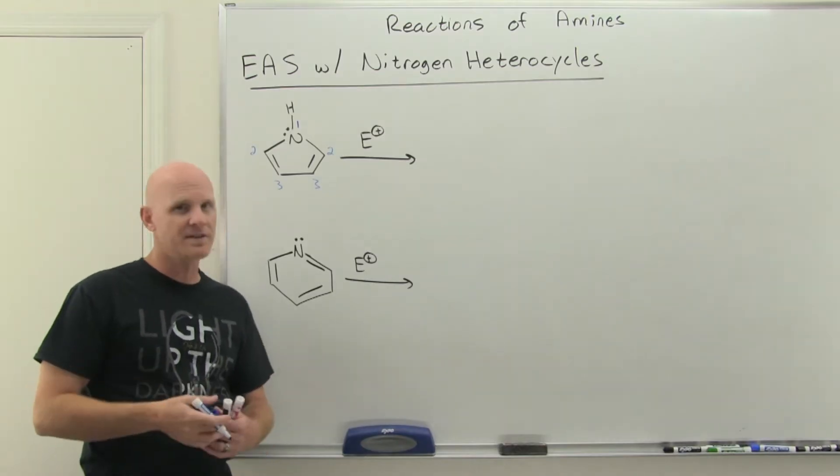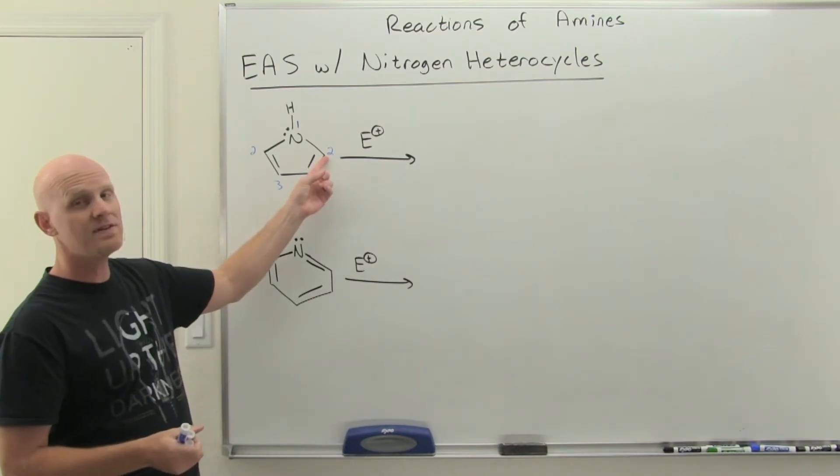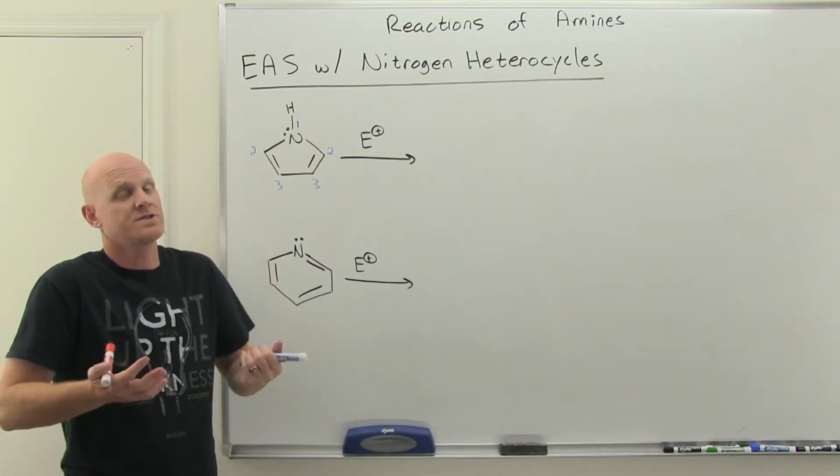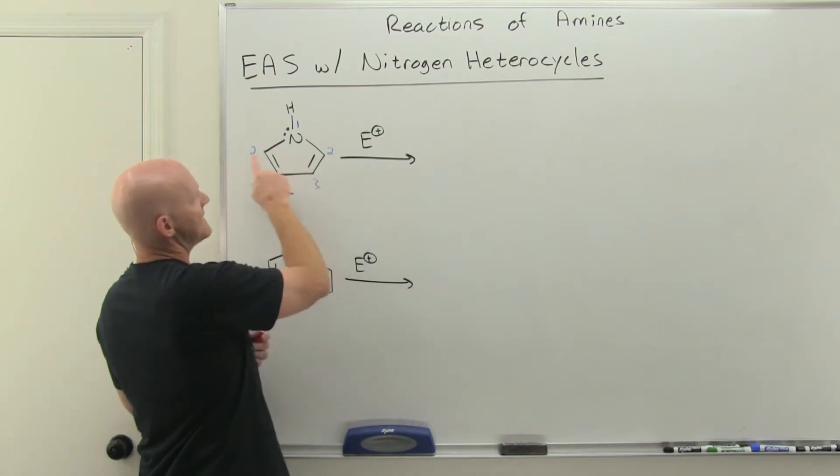We don't have like ortho meta para or anything like that. We just have one, two, and three. And it turns out EAS is going to occur at this two position. And we've got to explain why. Well, it turns out we're just going to get the most stable intermediate possible when we happen at the two position as opposed to happening at the three position. So let's kind of take a look at why.